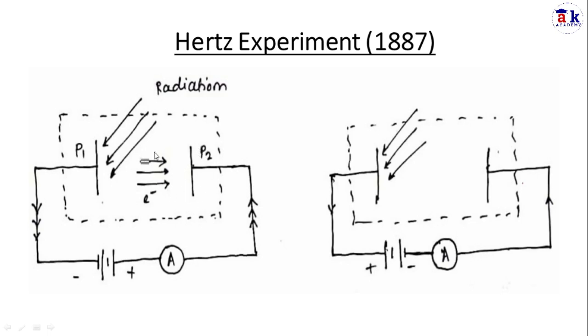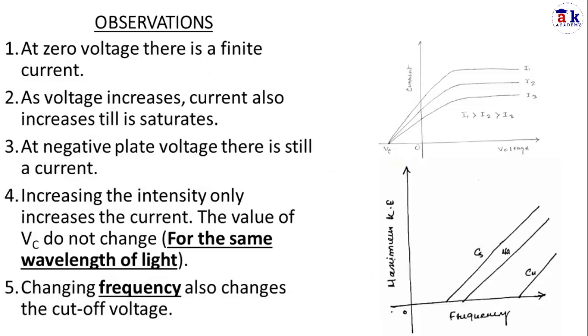What we get is some electrons coming out of plate P1 which are collected at plate P2. These electrons are called photoelectrons. This is the same experimental setup, but here plate P2 may have a negative potential. Now let's go through the observations. This is a typical current-voltage diagram of this experiment. The first observation is at zero voltage there is a finite current.